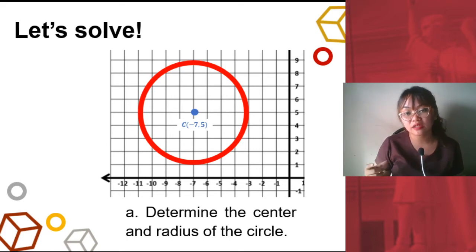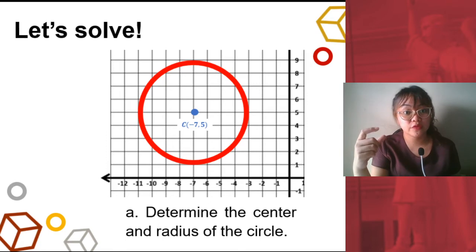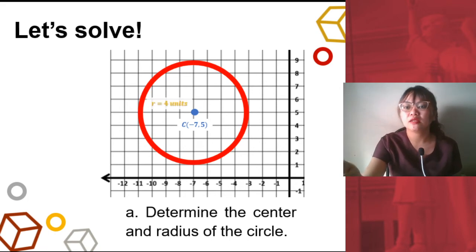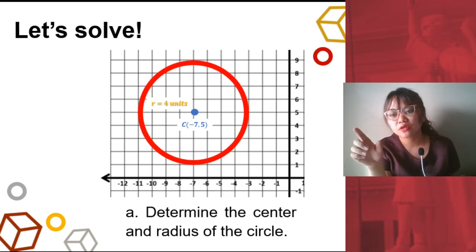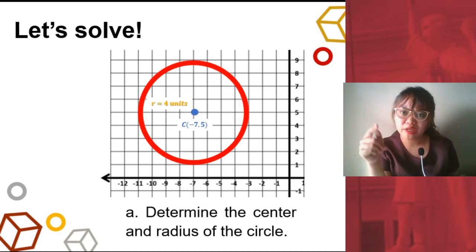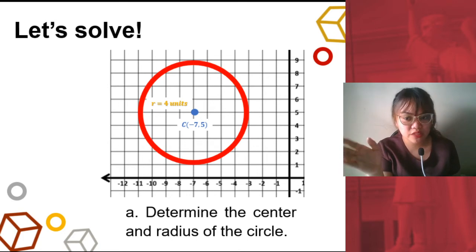Next, let's identify the radius. To identify the radius, count the number of units — you're counting the units — and that is 4 units. You could either measure up, down, left, or right, whichever is convenient for you. Why is it important to first identify the center and radius? Because these are the two values you would need in order to answer Letter B, which is identifying the standard form.